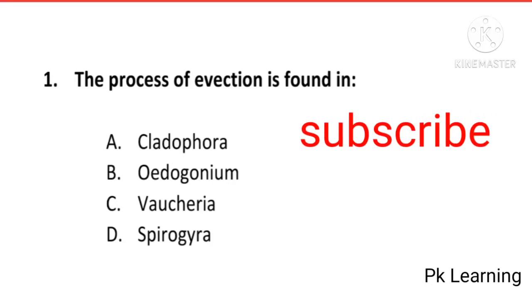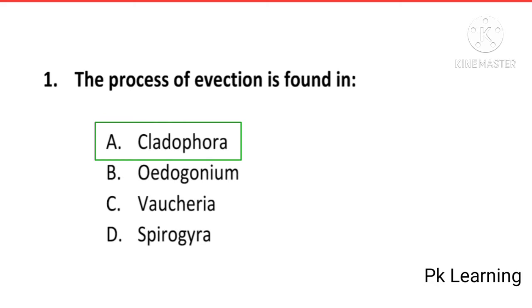Hello viewers, welcome to PK Learning. Let's start with five MCQs on botany. First question: the process of evection is found in: A. Cladophora, B. Oedogonium, C. Vaucheria, D. Spirogyra. The answer is A, Cladophora.